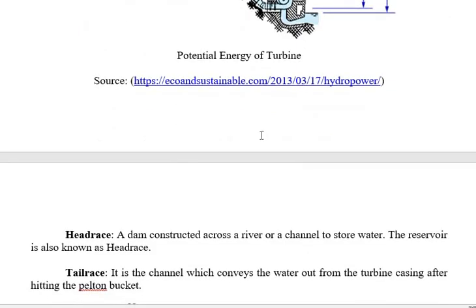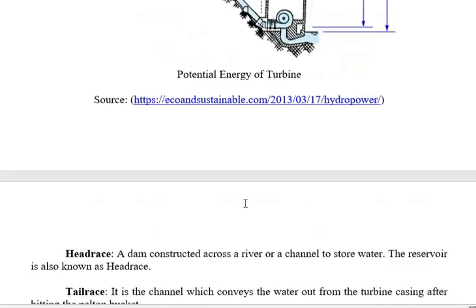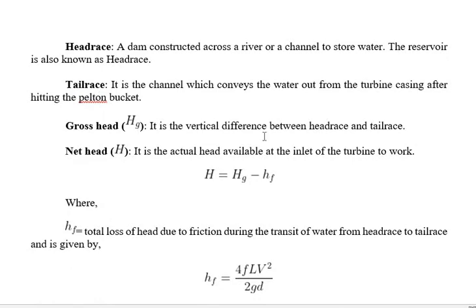The head race is the reservoir or dam. The tail race is the channel connected after the water exits from the turbine casing after hitting the Pelton buckets. The gross head is the vertical difference between the head race and the tail race. The net head is the actual head available at the inlet of the turbine, which accounts for the loss of head due to friction during the transition of water from head race to tail race.